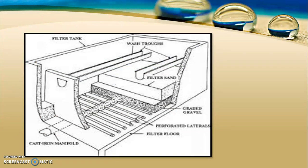This shows the structure of a rapid sand filter. It has a gravel layer, a sand layer, and a wash water trough above the sand layer. At the bottom is an under-draining system from where the filtered water is passed. Water first enters the filter sand, then the gravel, and then passes through perforated laterals to a central manifold, and from there to further processes.